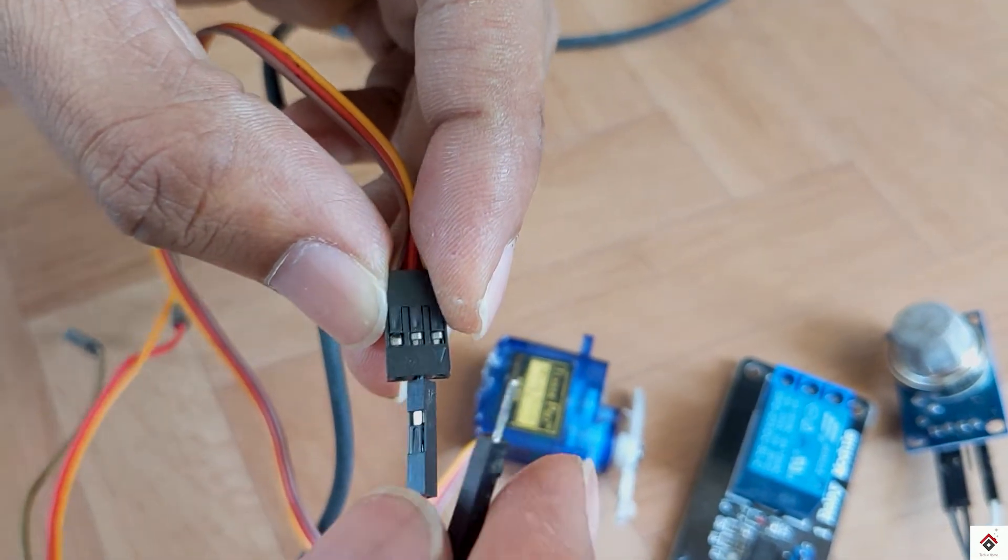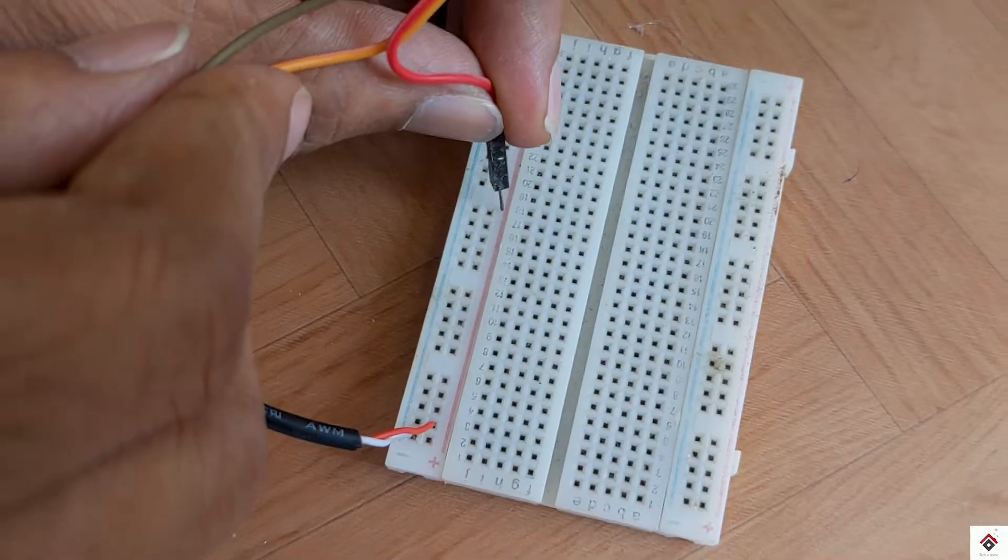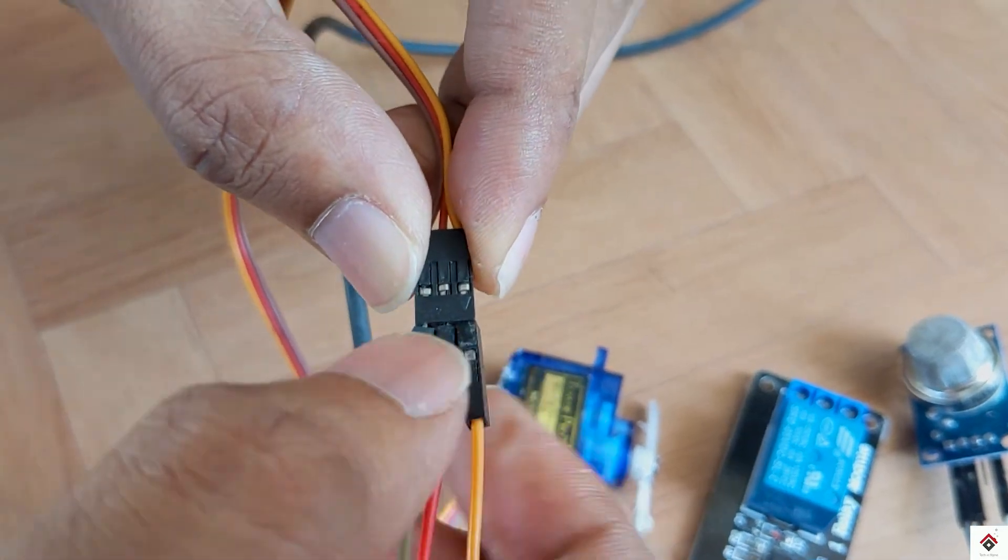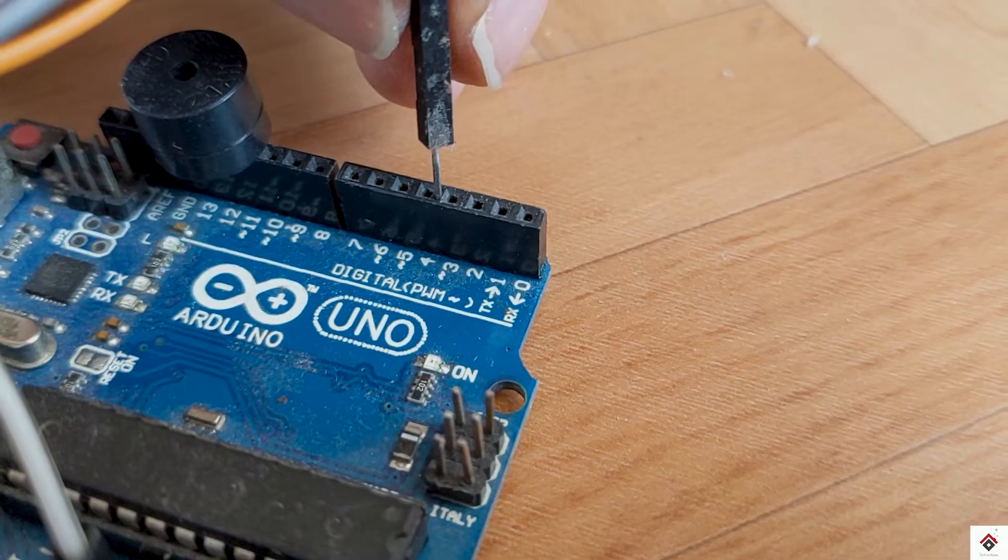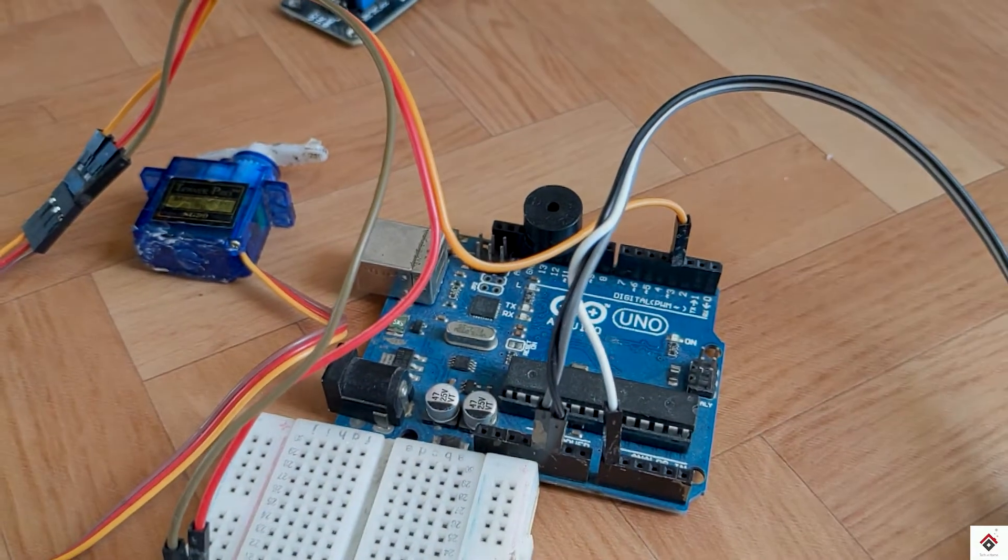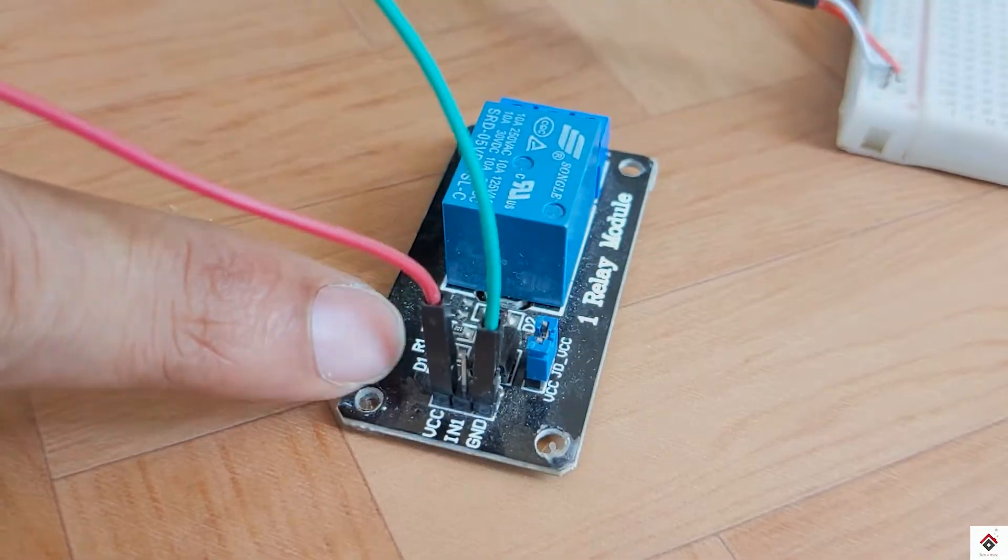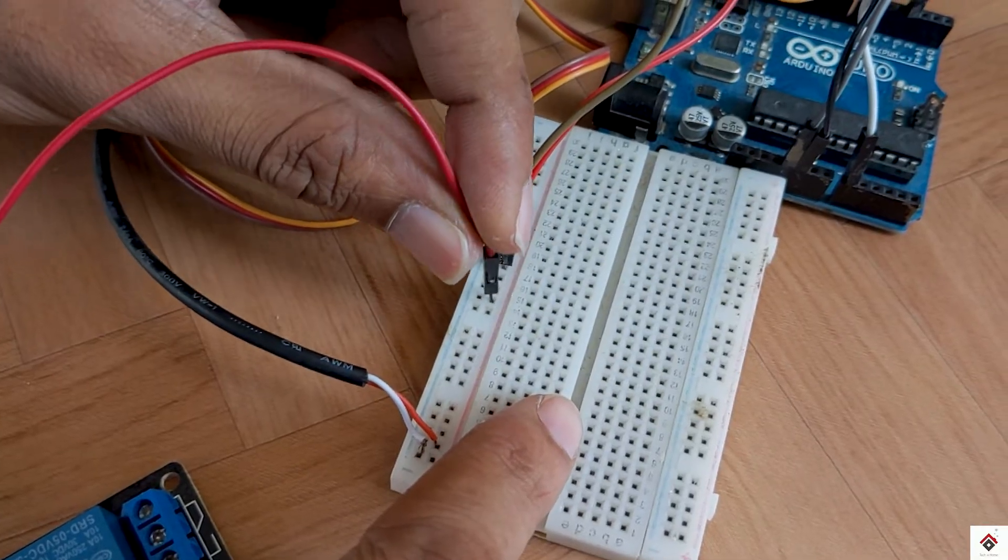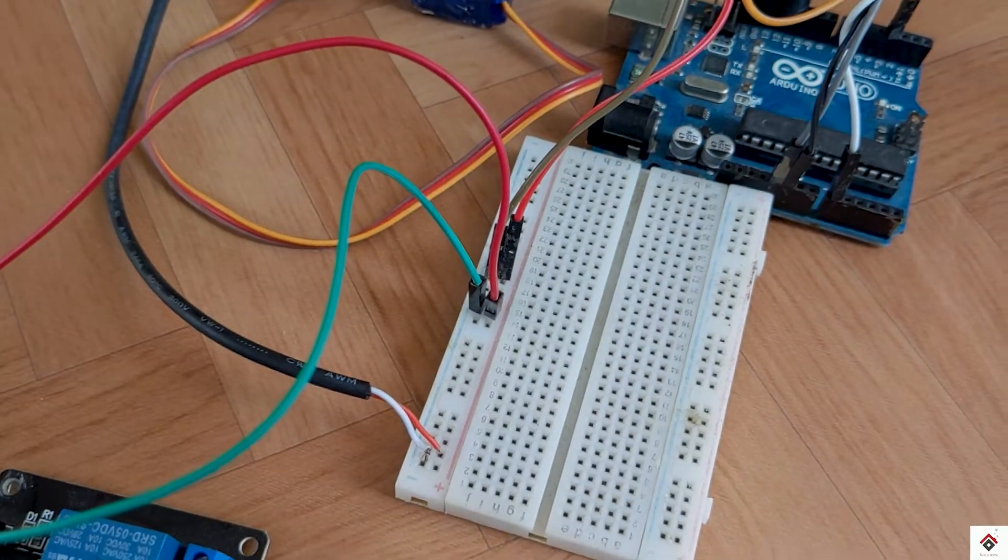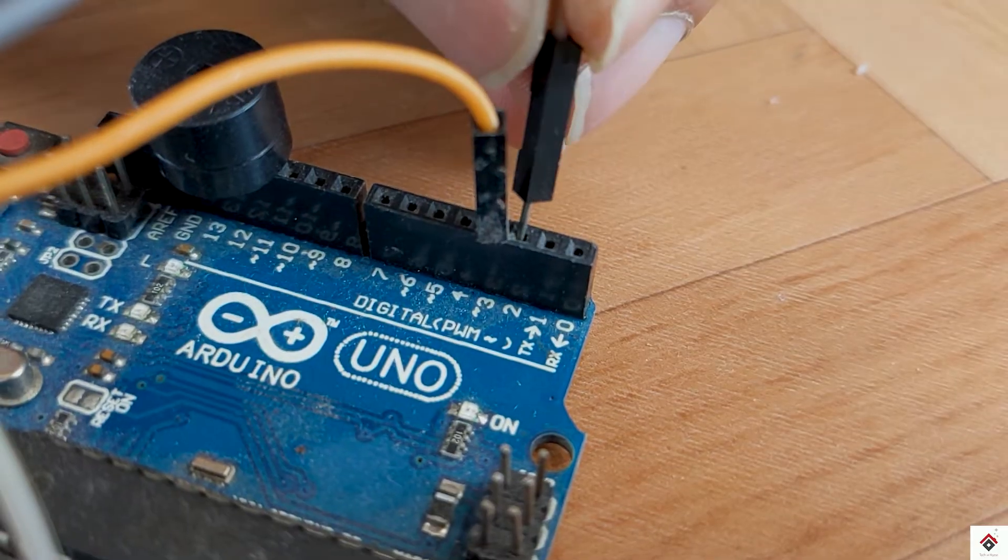The VCC and ground of the servo motor goes to external 5-volt and ground. The signal pin goes to Arduino digital pin 3, which is a PWM pin. The VCC and ground of the relay module also goes to 5-volt and ground of the external supply. The input signal pin goes to Arduino digital pin 2.